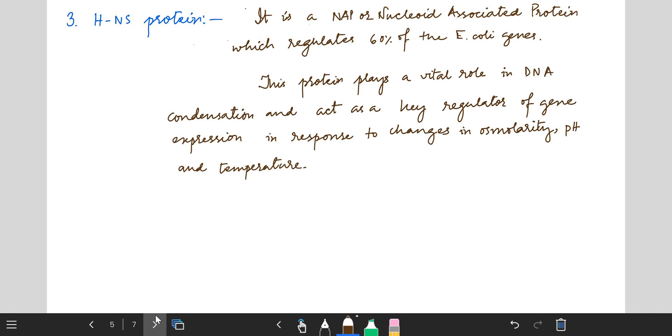HNS represents histone-like nucleoid structuring heat-stable protein. This is a kind of NAP or nucleoid associated protein which regulates 60% of E. coli genes. This protein plays a vital role in DNA condensation and acts as a key regulator of gene expression in response to changes in osmolarity, pH and temperature.